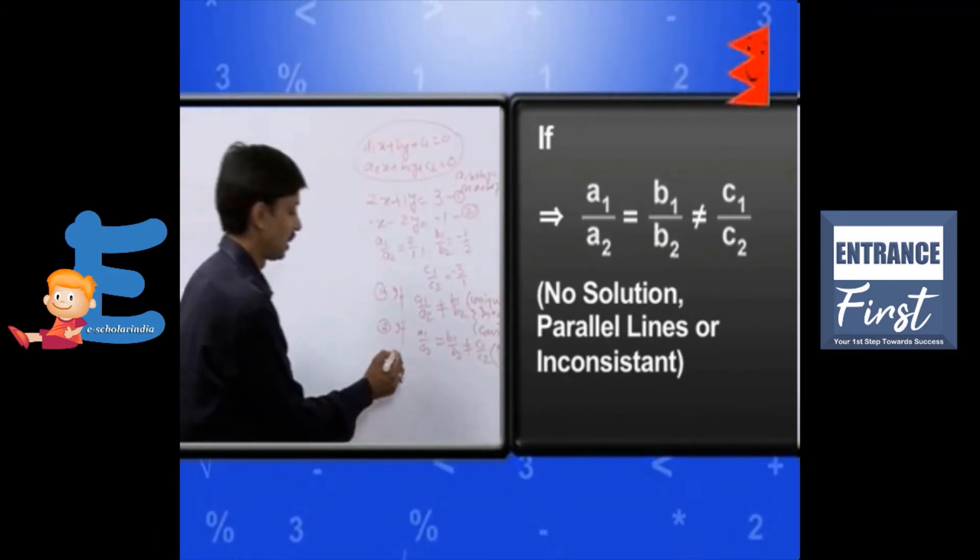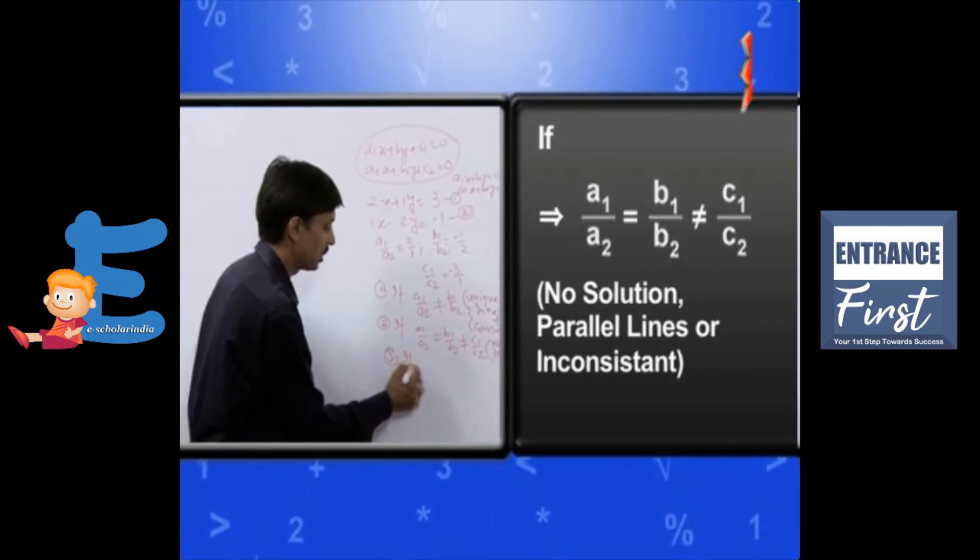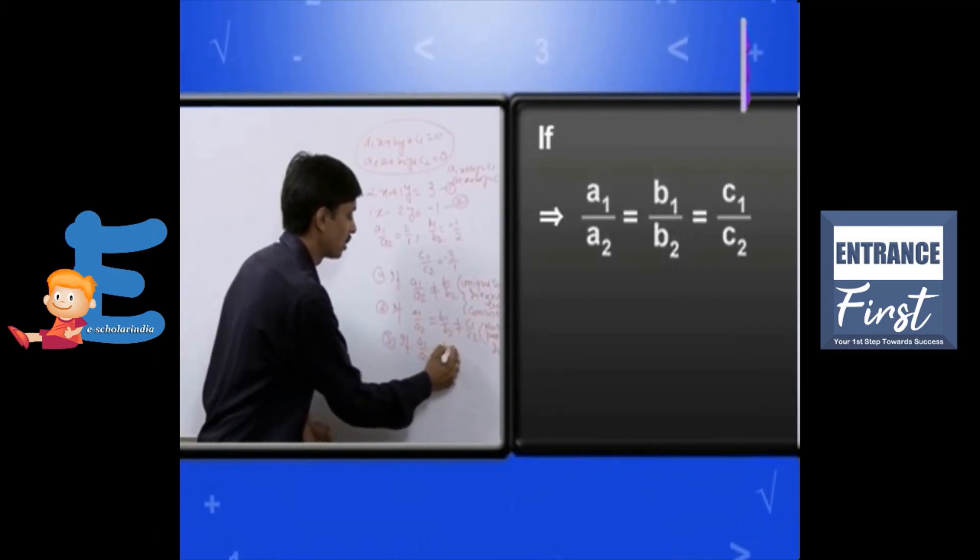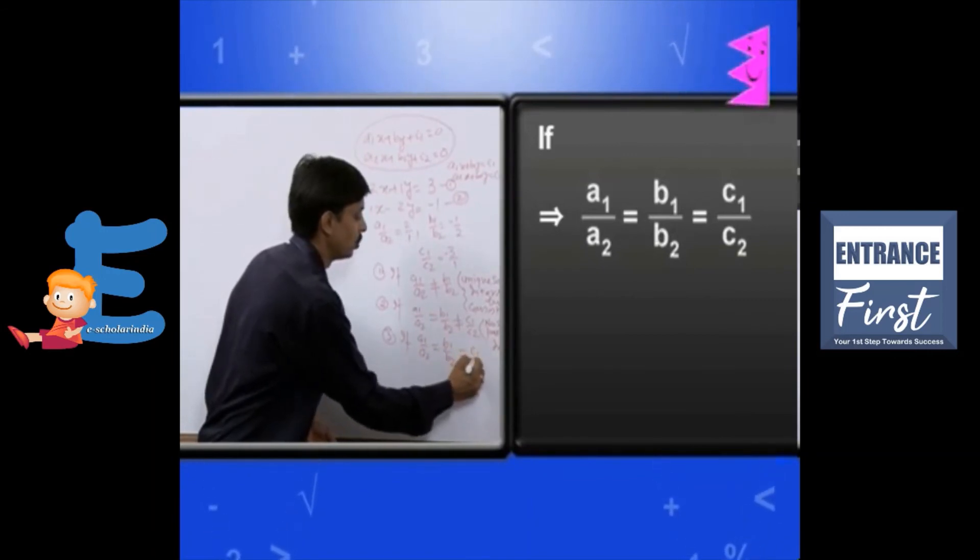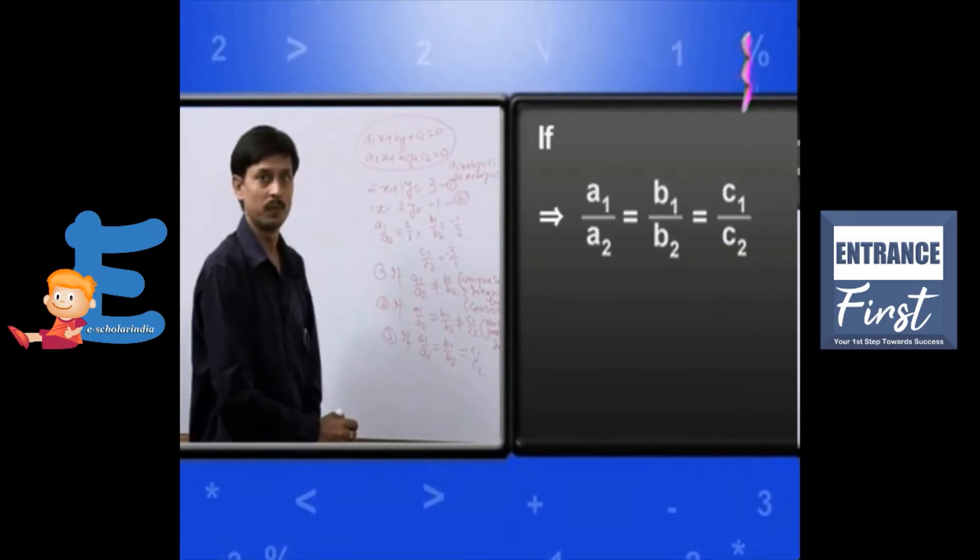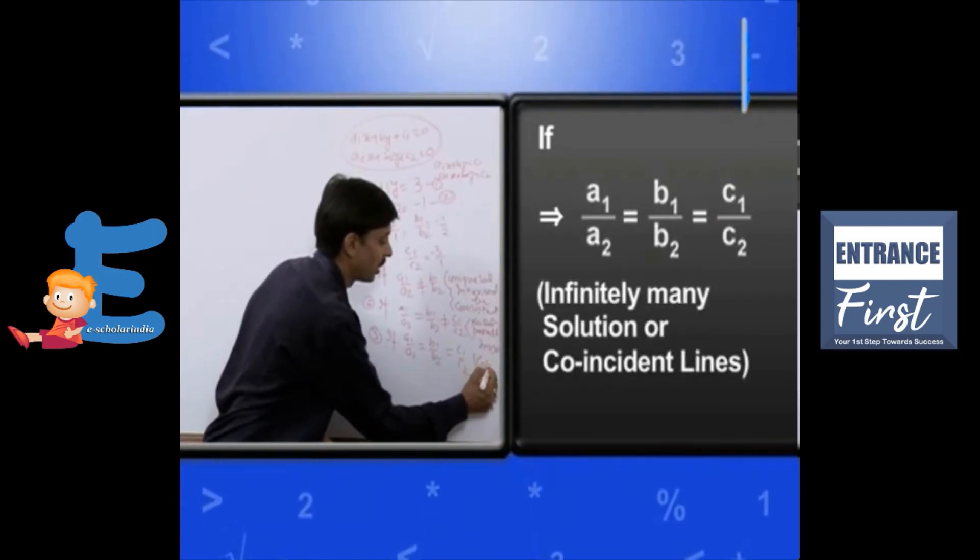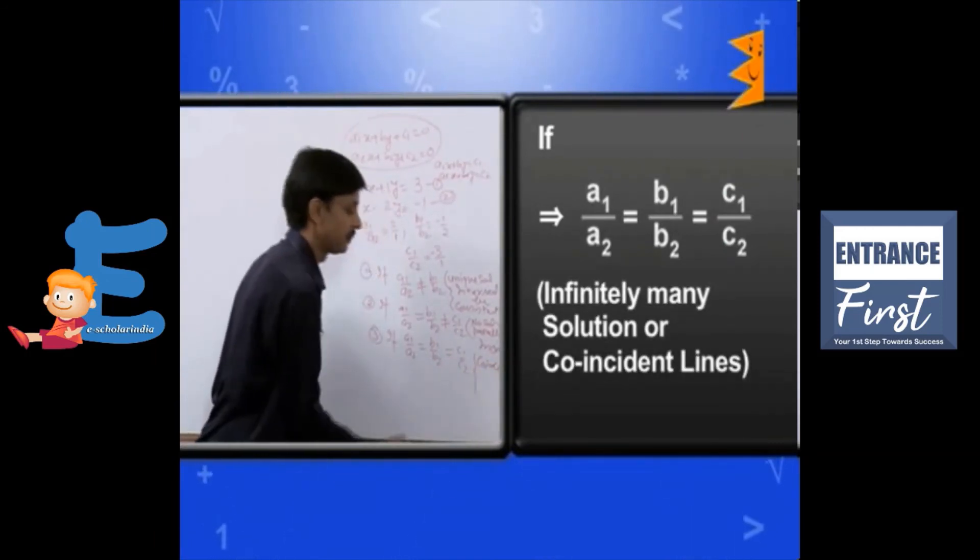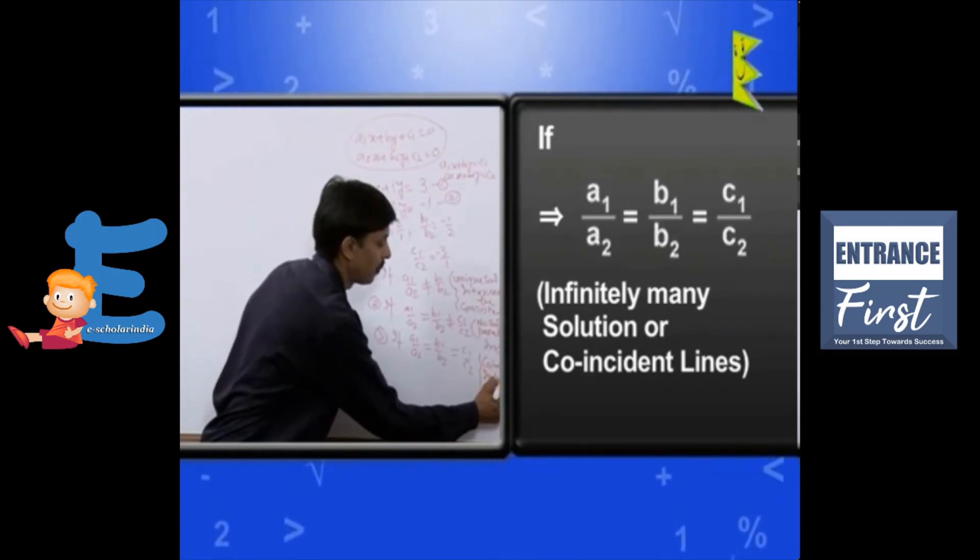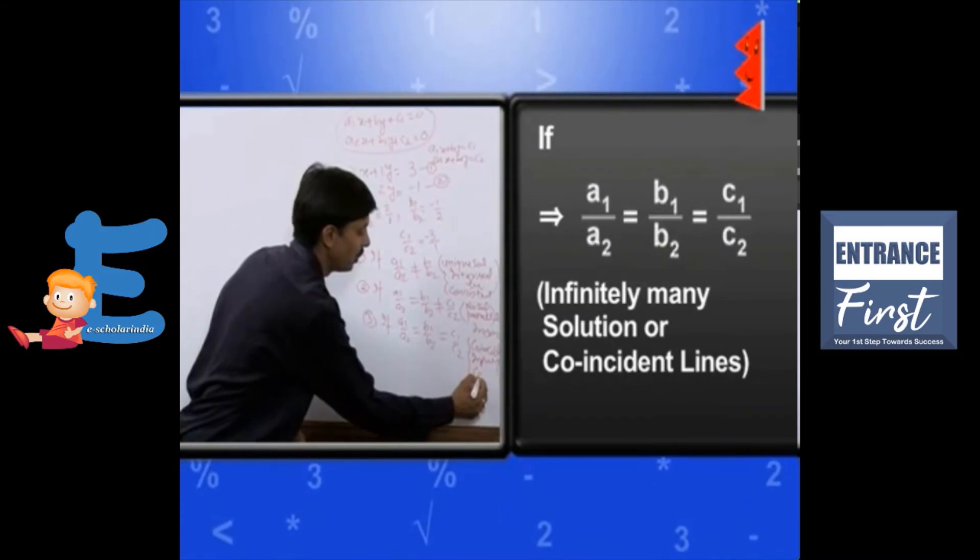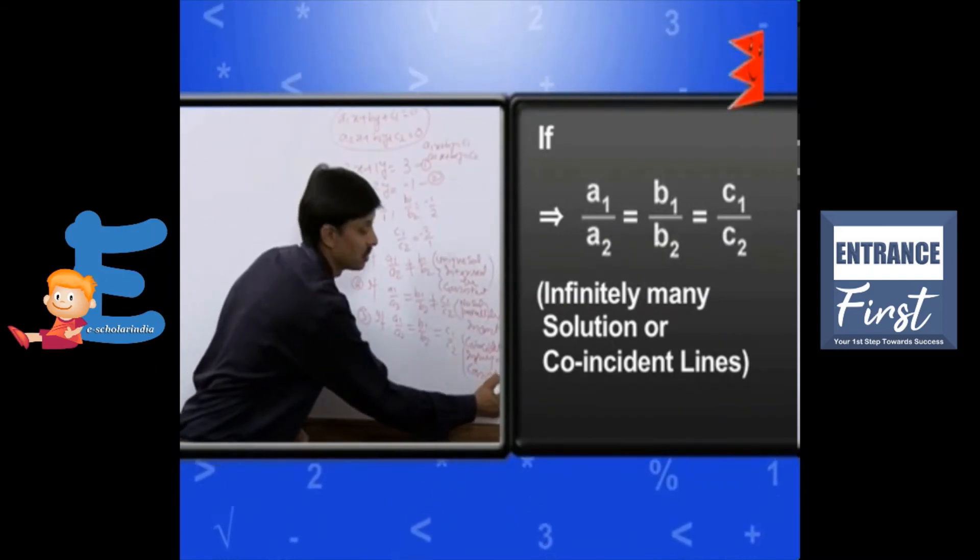The third case is if a1 upon a2 equals b1 upon b2 equals c1 upon c2. If it is coming, we call it coincident lines or we call it infinitely many solutions or we say it is also consistent.